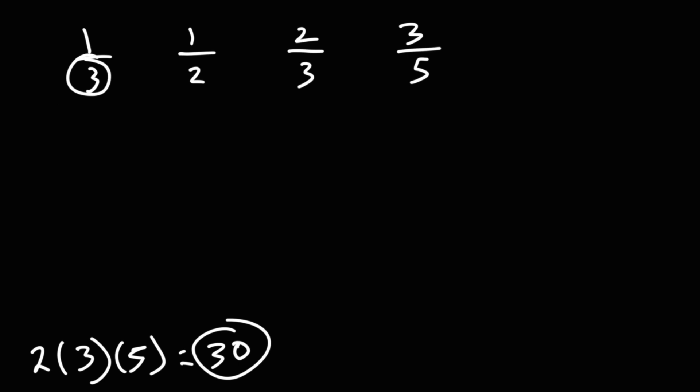30 divided by 3 is 10. So I'm going to multiply 1 over 3 by 10 over 10. 30 divided by 2 is 15. So I'm going to multiply that fraction by 15 over 15. This one, I'm going to multiply by 10 over 10, because 30 divided by 3 is 10. Now, 30 divided by 5 is 6. So I'm going to multiply this one by 6 over 6.